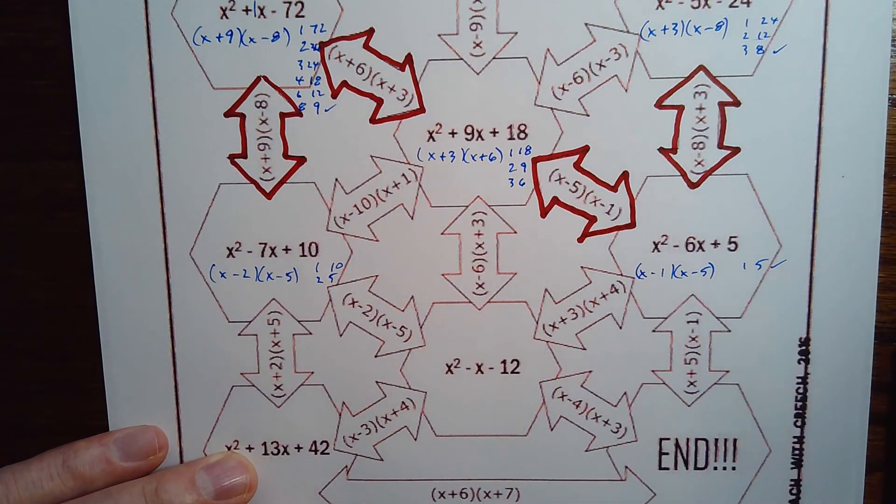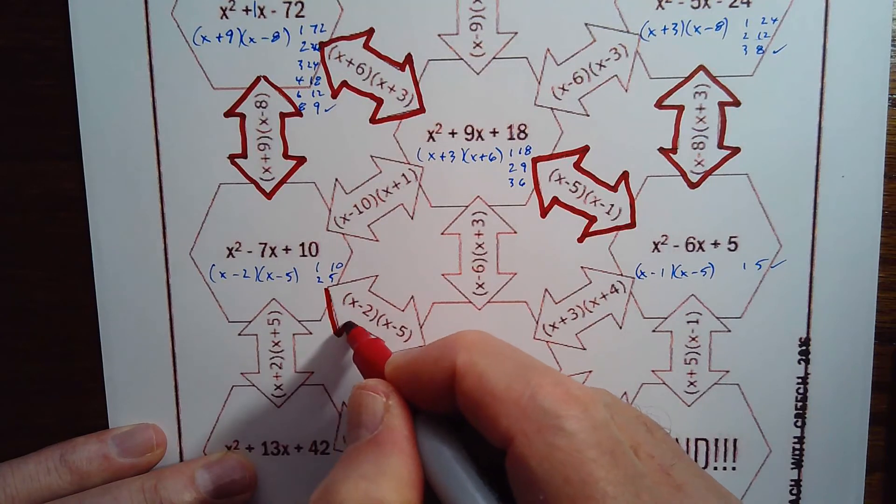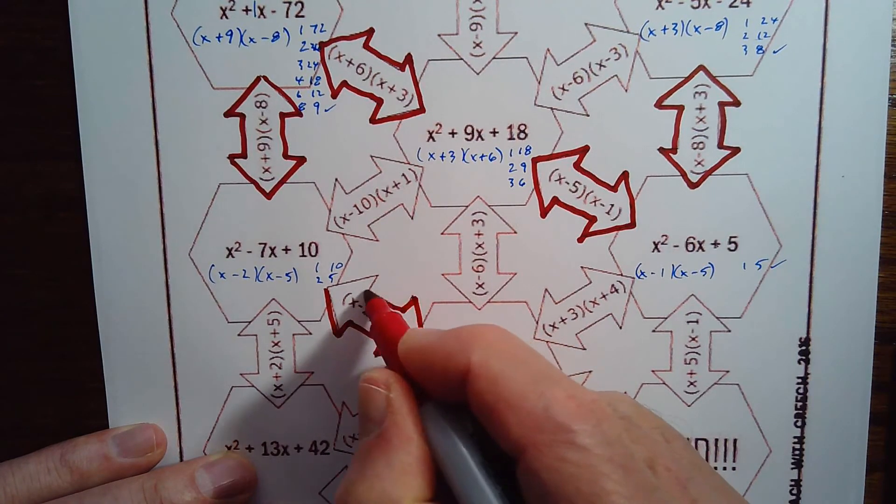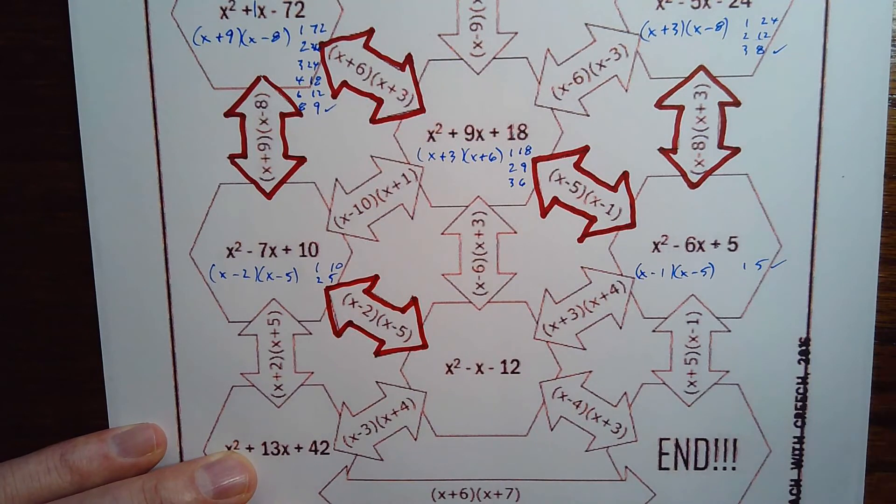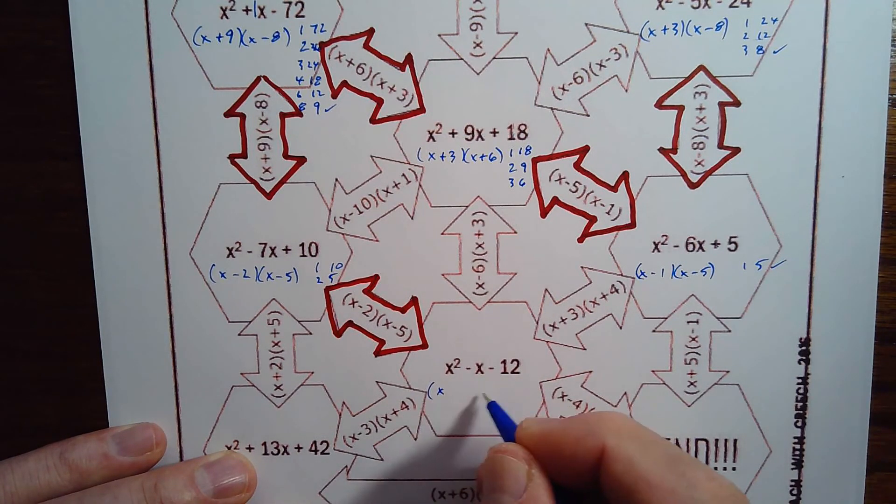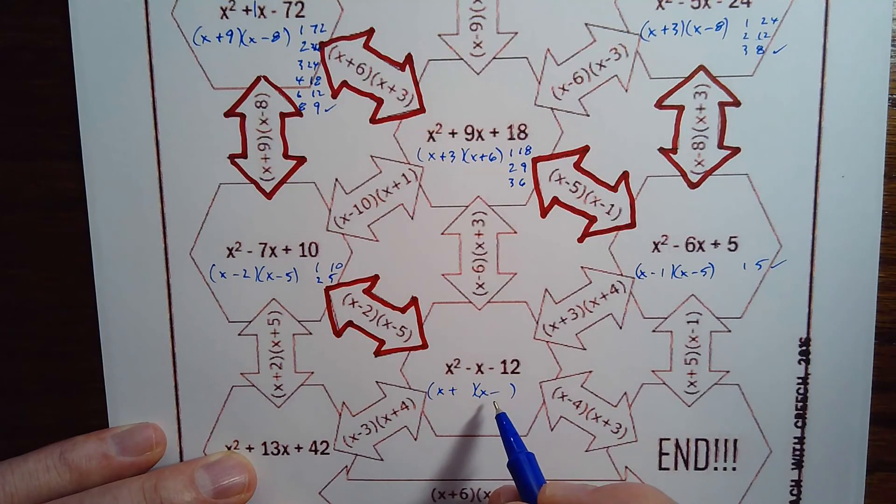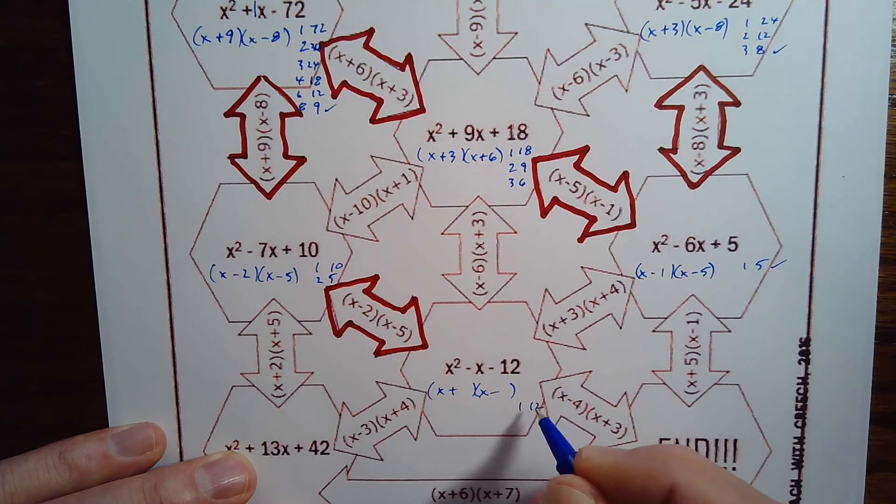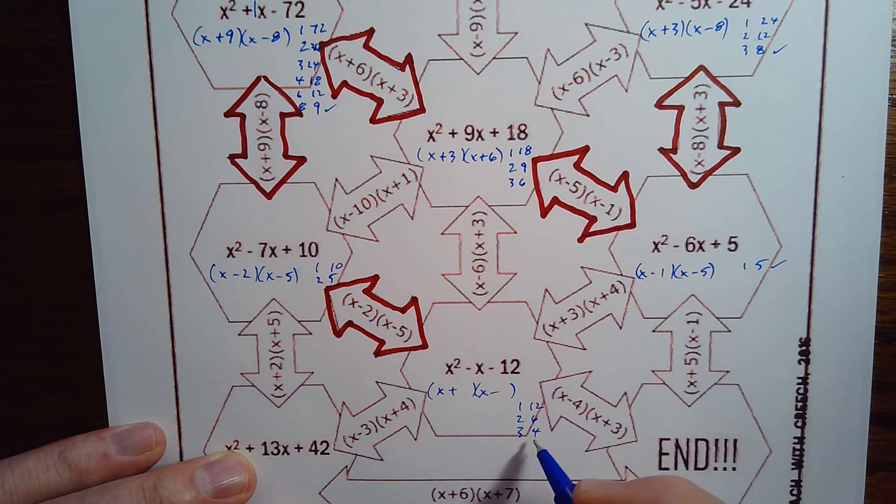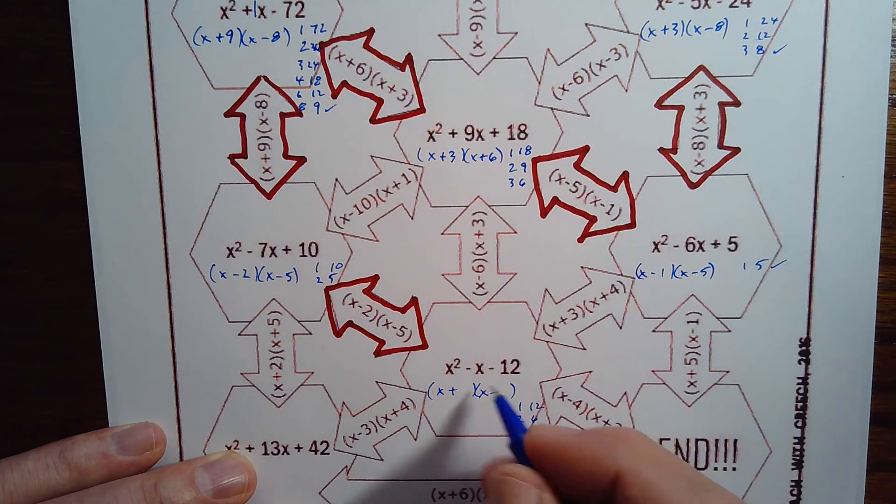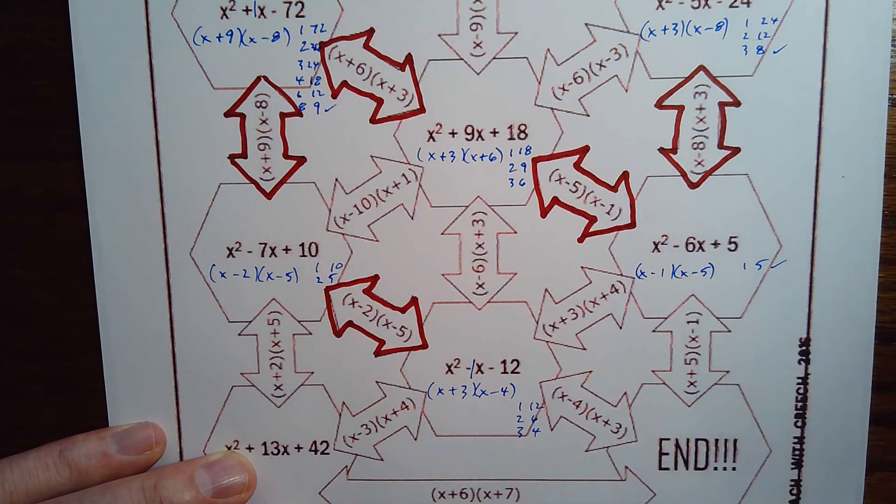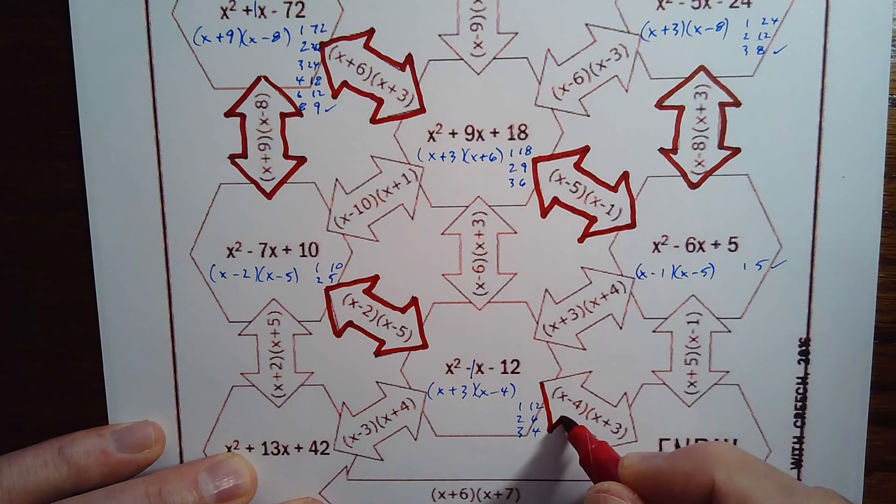And this one here, x and x. It's a minus sign, so that means there's one of each sign, negative times a positive. And then 1 and 12, that doesn't work. 2 and 6, no. 3 and 4, yeah, they're 1 apart. Which one do I want to make negative? The bigger one, since I've got a negative 1 there. So negative 4, positive 3. And there it is, we just finished the maze.